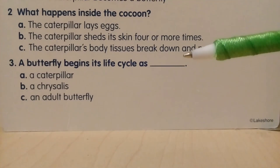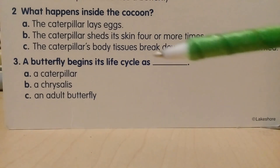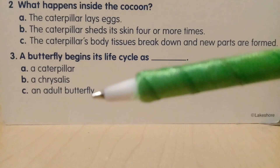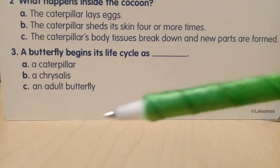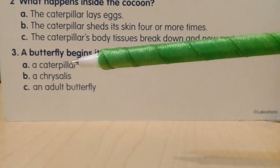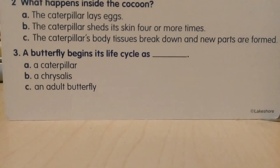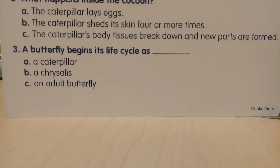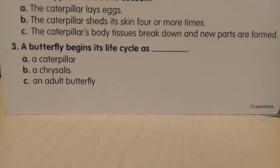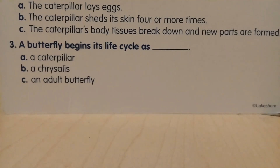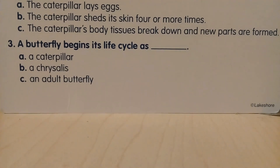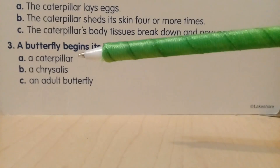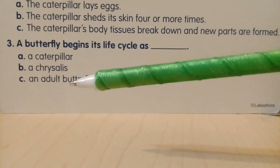Question three: a butterfly begins its life cycle as — A, a caterpillar; B, a chrysalis; C, an adult butterfly. Well, nothing begins as an adult, so C could not possibly be the answer. It's either A, a caterpillar, or B, a chrysalis. Pause the video, go back to the text and find the answer — really go back and find it. The answer is A, a caterpillar. When it hatches from its egg it's a caterpillar; later it becomes a chrysalis, and then eventually an adult butterfly.